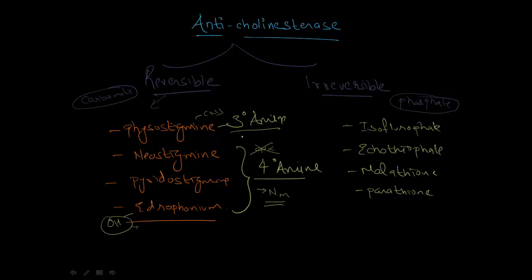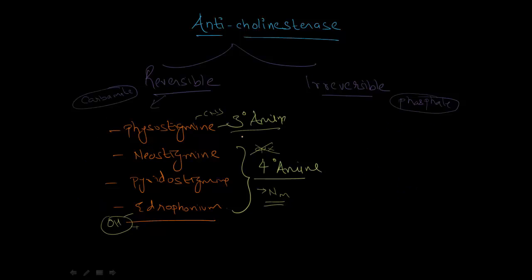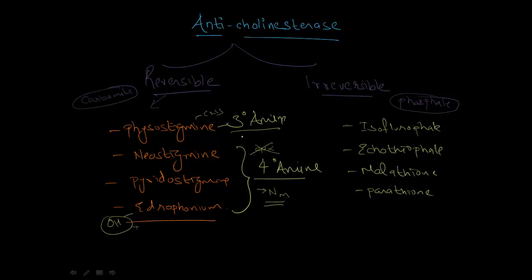Edrophonium has a special alcohol group which makes it water soluble. One more thing about physostigmine is that it is obtained from a plant product, so it is an alkaloid, while all other drugs are synthetic. The irreversible anticholinesterases include isofluorophate, ecothiophate, malathion, and parathion. These are the main contents of insecticides and pesticides — they are not therapeutic drugs but are important in the context of poisoning and its management.